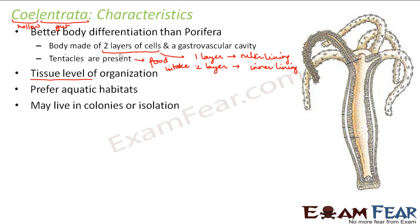Coelenterata may live in colonies or in isolation. Some live singly, while others group together and live in colonies. An example of a Coelenterate that exists in isolation is Hydra. In the picture of Hydra, you can see the tentacles extending from the body.